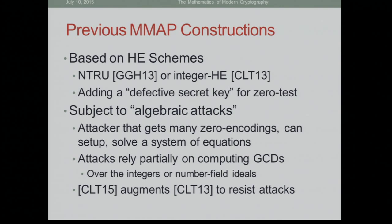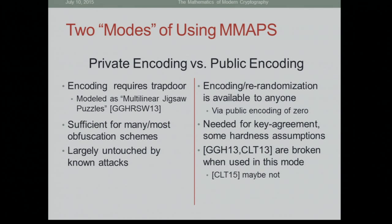The CLT13 version was fixed to protect against these attacks. Before I talk about our own work, let me give a high-level lay of the land of what kinds of attacks we have and what kinds of schemes we have. When you talk about a multilinear map, there are two modes: public encoding or private encoding. In private encoding mode, you require trapdoor information in order to encode elements — only the entity that generates an instance can generate encodings, and everybody else can only compute on those encodings. This was modeled as multilinear jigsaw puzzles. It's sufficient for many of the obfuscation schemes, and for the most part, none of the attacks touch this mode.